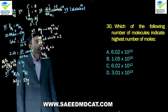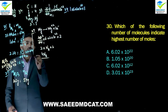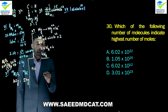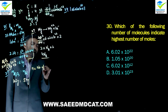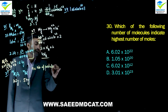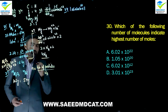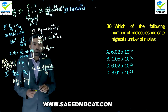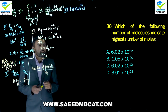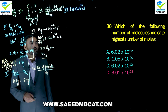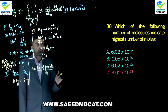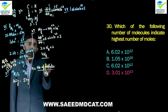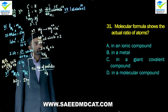Question 30: Which number of molecules indicates highest number of moles? Number of moles = number of particles ÷ Avogadro's number. Since Avogadro's number is constant, more particles means more moles. Delta option has 3.01×10²³, the largest value, so it has the highest moles.